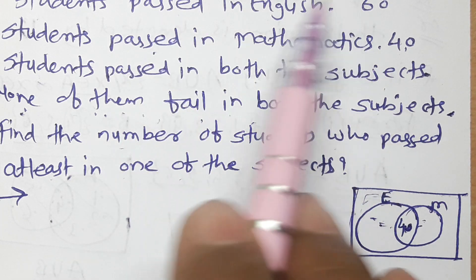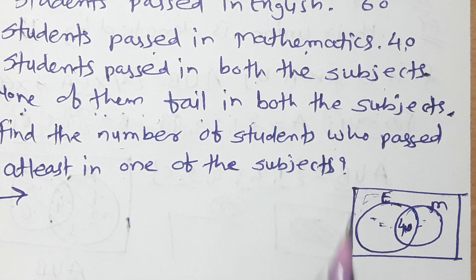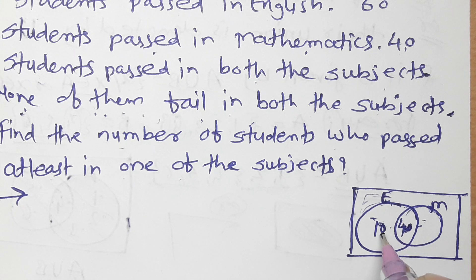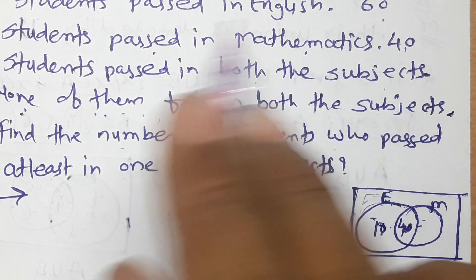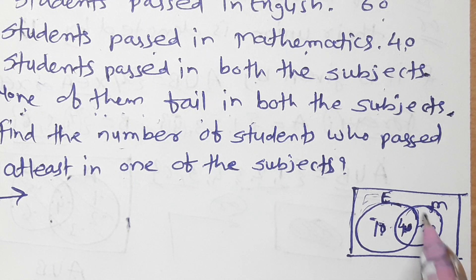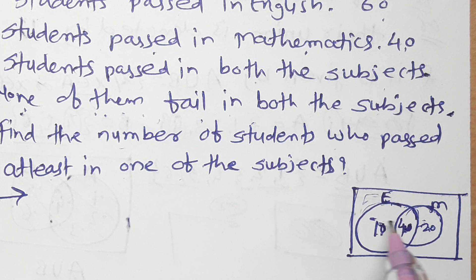In English, 50 students passed. Since 40 is common, only English is 10 — meaning they failed in maths. In maths, total 60 students passed. Since 40 is common, only maths is 20. So 20 students passed maths but not English.